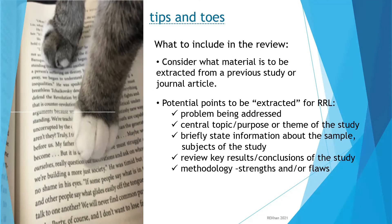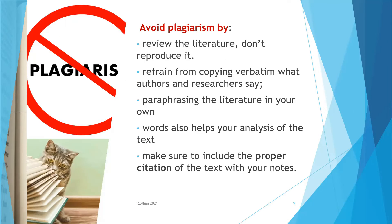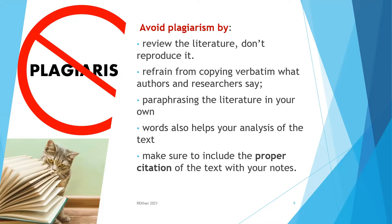What to include in the review: Consider what materials are to be extracted from previous studies or journal articles. Potential points to be extracted are: the problem being addressed, the central topic or purpose or theme of the study, information about sampling or the subject of the study. You could also review the key results and conclusion of the study, and finally, look at the methodology and see its strengths or flaws.